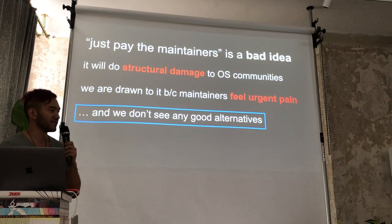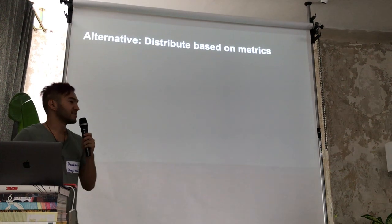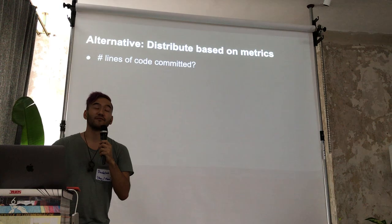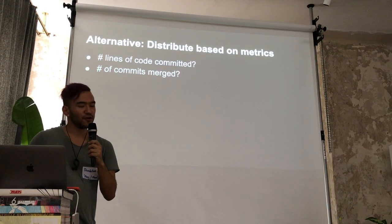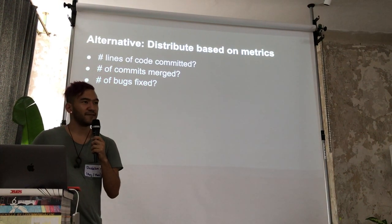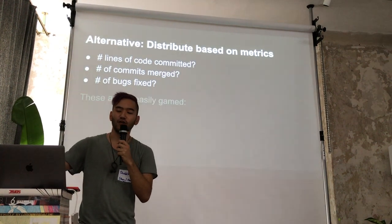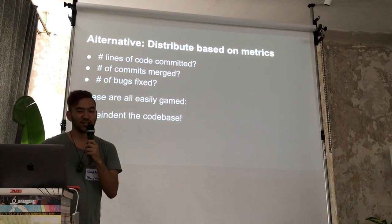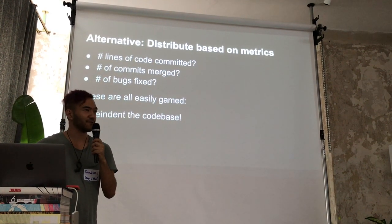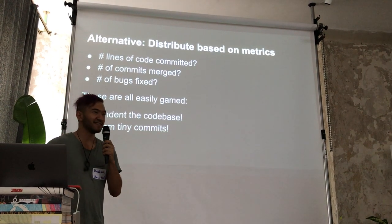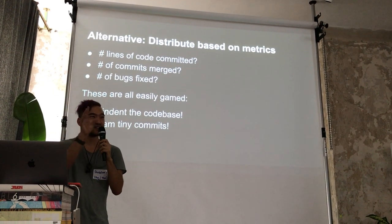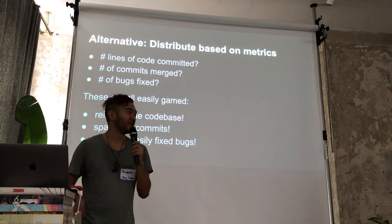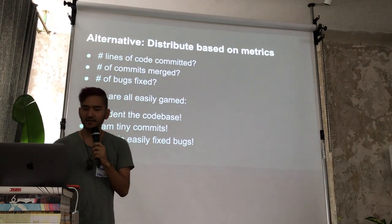We don't see good alternatives to just paying maintainers, so let's look at what alternatives exist. We could try paying people based on metrics — number of lines of code committed, commits merged, or bugs fixed. But these are all easy to game. I could re-indent the whole codebase, changing every line. I could spam tiny commits or split one feature into 14 little changes. Or I could sneak in little bugs because I know how to fix them later.